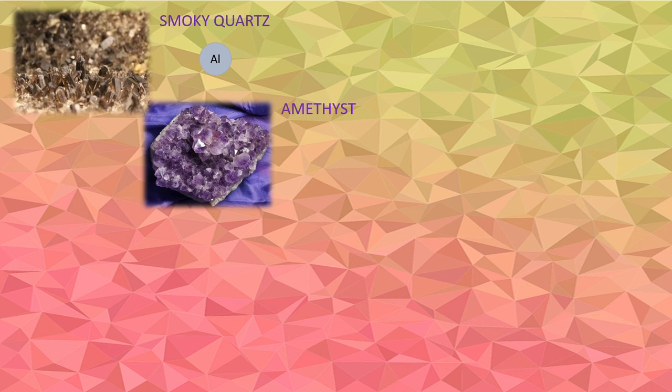For example, smoky quartz or black quartz has a grayish appearance due to the presence of a colored center related to aluminum, which substitutes the silicon element. Amethyst appears as violet due to the presence of traces of iron or iron oxide hydroxide.